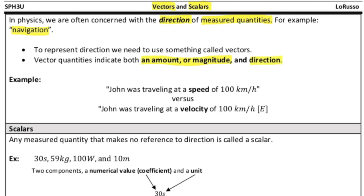Let's take a look at an example of a vector versus something that is called a scalar. A scalar is just a measured quantity without making reference to its direction. For example, John was traveling at a speed of 100 kilometers per hour.